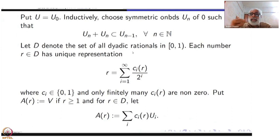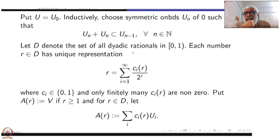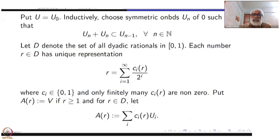Let D denote the set of all dyadic rationals in [0,1]. Each r in D has a unique representation r = Σ c_i(r) / 2^i, where the coefficients c_i(r) are either 0 or 1, and only finitely many c_i(r) are non-zero. These are the dyadic rationals.